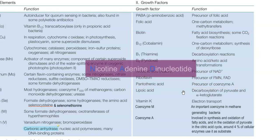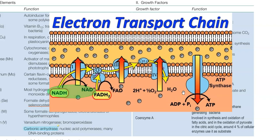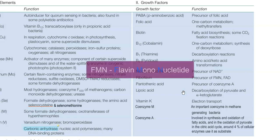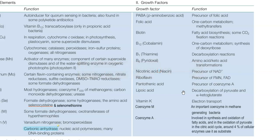Nicotinic acid is a precursor for NAD — nicotine adenine dinucleotide — which can be present in oxidized form (NAD) or reduced form (NADH), playing an important role in the transfer of electrons in the electron transport chain. Riboflavin is required as a precursor for FMN (flavin mononucleotide) and FAD (flavin adenine dinucleotide). Pantothenic acid is required as a precursor for coenzyme A synthesis. Lipoic acid is required for decarboxylation of pyruvate and alpha-ketoglutarate. Vitamin K is associated with electron transport. Coenzyme M is an important coenzyme in methane-generating bacteria (methanogens), and coenzyme A is involved in synthesis and oxidation of fatty acids.